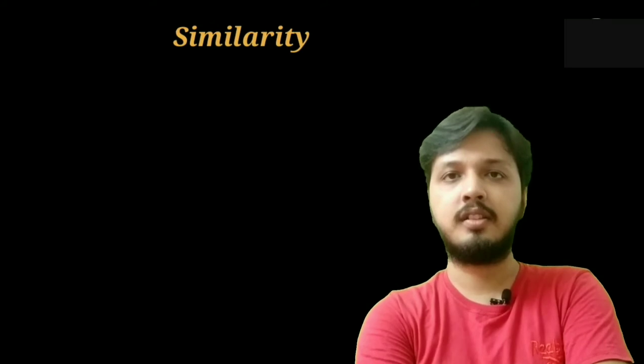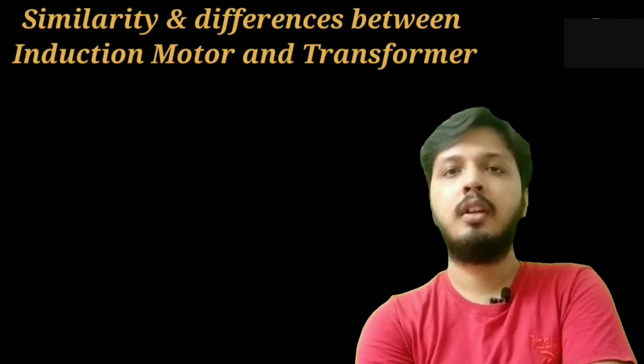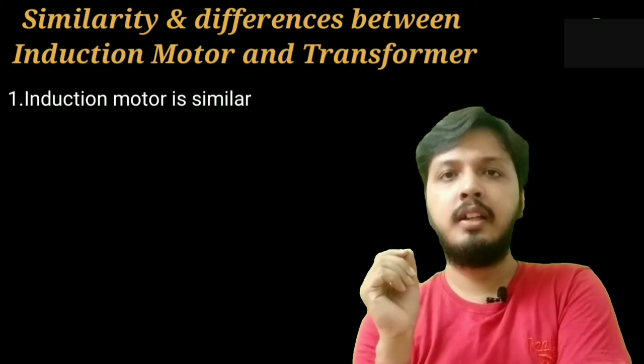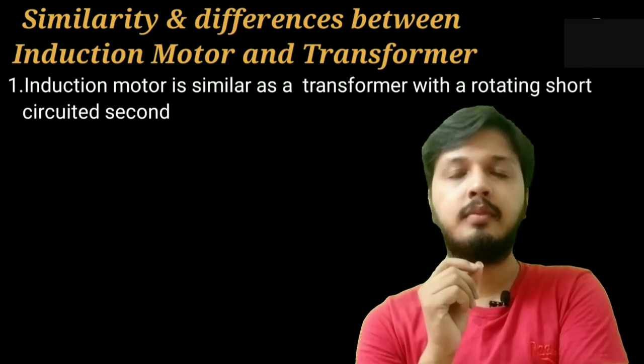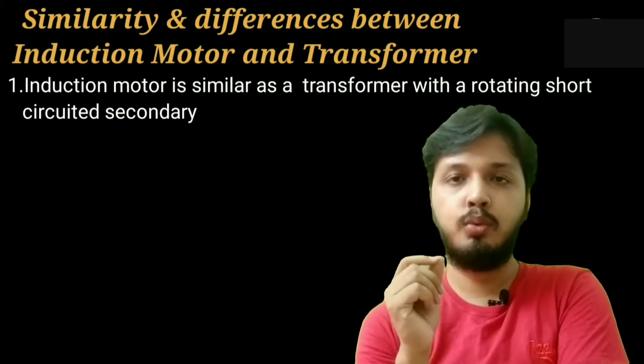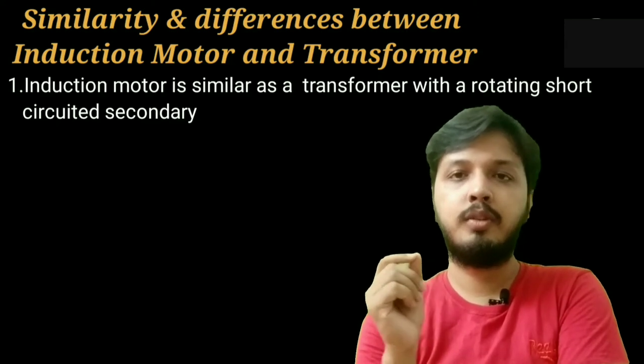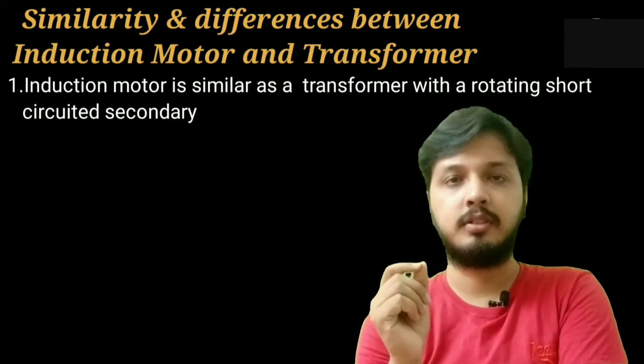Now I will discuss about the similarity and differences between induction motor and a transformer. Induction motor is similar to a transformer with a rotating short-circuited secondary, because the rotor of the induction motor is short-circuited through end ring in squirrel cage induction motor and it is short-circuited through slip ring in slip ring induction motor.